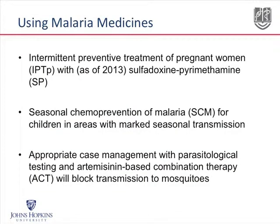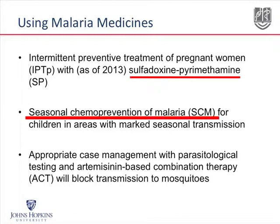The fourth slide shows some of the interventions we can use with medicines to control and prevent malaria. One is giving a treatment dose of sulfadoxine-pyrimethamine, or SP, to pregnant women during antenatal or prenatal care. We can also do seasonal chemoprevention of malaria in children in areas with seasonal transmission. The third way is prompt and appropriate case management by testing and treating with artemisinin-based combination therapy to block transmission from the person to the mosquitoes.